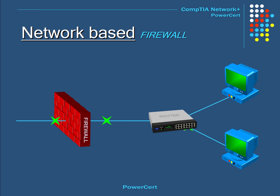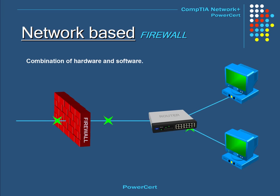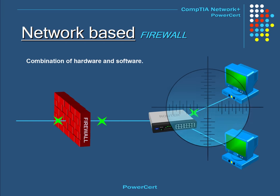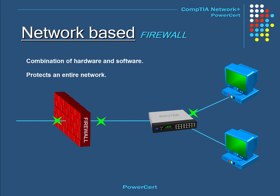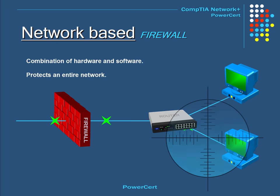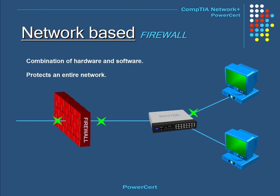Another type is called a network-based firewall. A network-based firewall is a combination of hardware and software that operates at the network layer. It is placed between a private network and the internet. Unlike a host-based firewall that only protects its own computer, a network-based firewall protects an entire network through management rules applied to the entire network, stopping harmful activity before it reaches the computers.